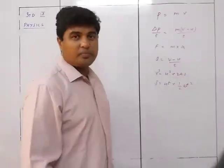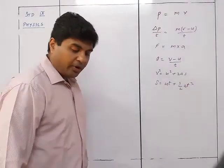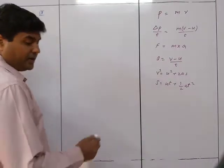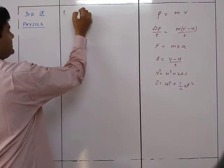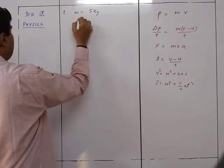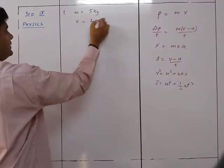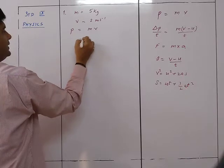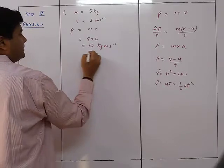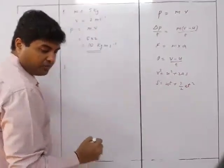Question 1: A body of mass 5 kg is moving with a velocity of 2 meter per second. Find its linear momentum. Mass is 5 kg and velocity is 2 meter per second, so p equals m times v equals 5 times 2 equals 10 kg meter per second.